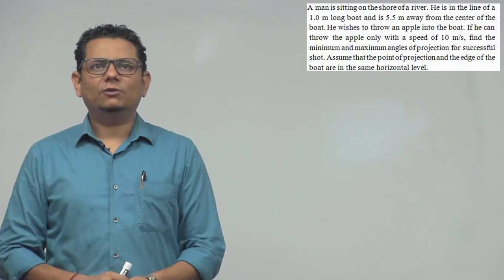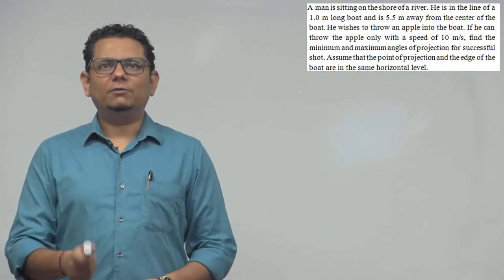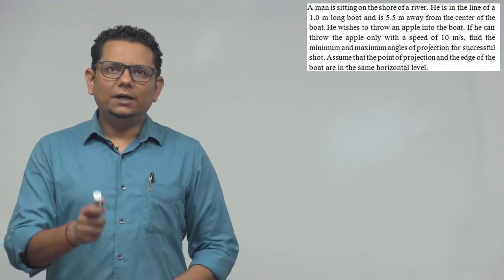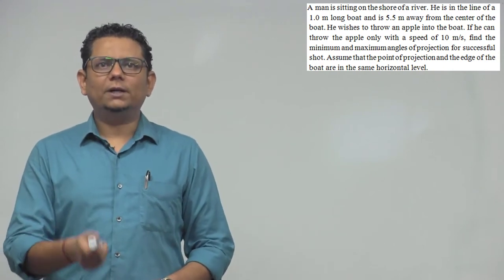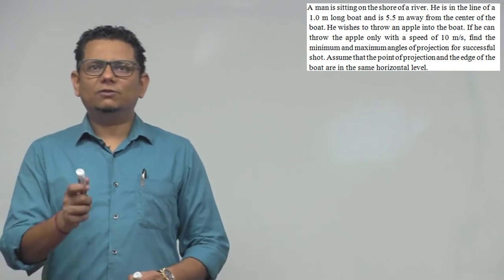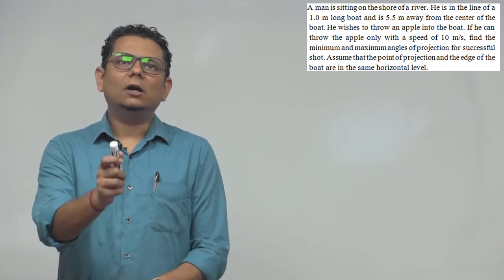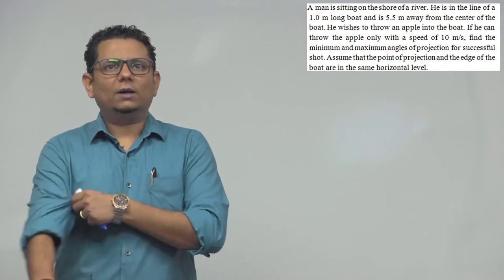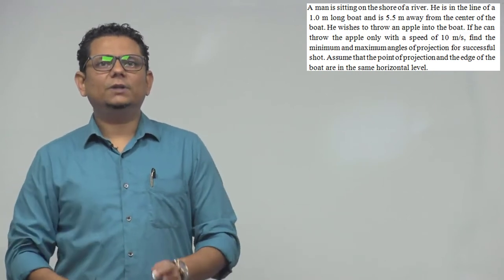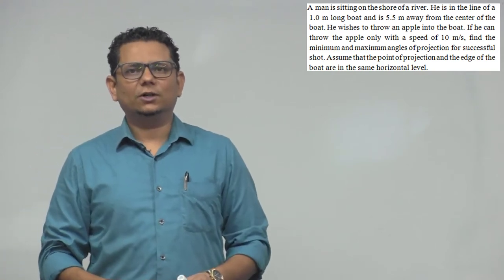Next question. A man is sitting on the shore of a river. He is in the line of a 1 meter long boat and is 5.5 meters away from the center of the boat. He wishes to throw an apple into the boat. If he can throw the apple only with a speed of 10 meters per second, find the minimum and maximum angle of projection for a successful shot. Assume that the point of projection and the edge of the boat are in the same horizontal plane.